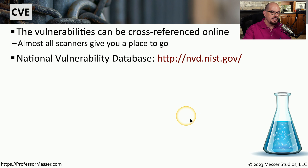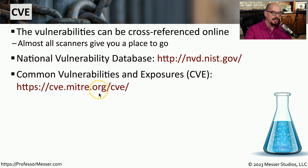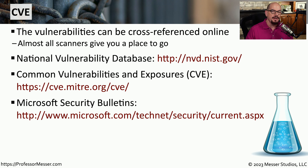You can cross-reference this against the National Vulnerability Database at nvd.nist.gov. You can also look at the Common Vulnerabilities and Exposures database, or the CVE, at cve.mitre.org. If the vulnerability is specific to Microsoft, you might even check the Microsoft website — the URL for the Microsoft Security Bulletins is listed here. Most manufacturers will have a database of their own vulnerabilities, so once you've referenced the CVE database, you may want to go directly to the manufacturer to see what other information they can provide.